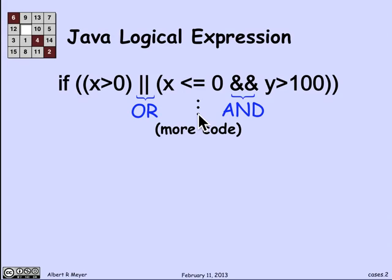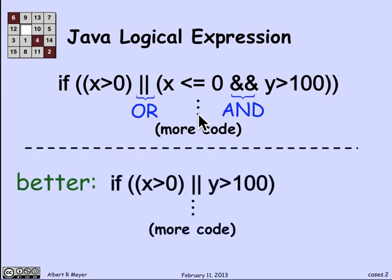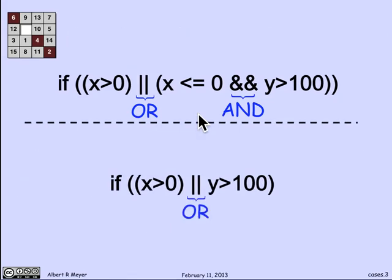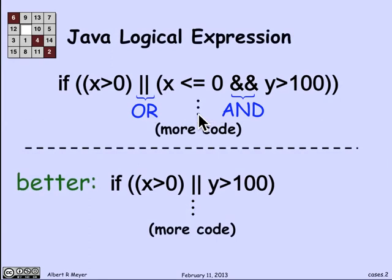Now what I claim is that this code can be improved if it's rewritten in the following way, namely, if x is greater than 0 or y is greater than 100. So the claim is that these two hunks of code, if I just replace this test, which has three components that require an extra step to evaluate in some cases, by this code, the programs are going to behave exactly the same way. And therefore, it's just more efficient and easier to understand and runs one step faster if I replace this longer expression by this shorter expression.